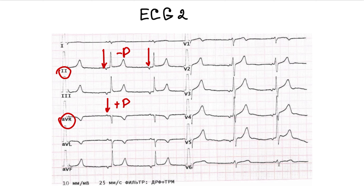The p-wave is consistent within the same lead and still precedes the QRS complex, indicating that the atria are being activated before the ventricles. This means that the rhythm source is in the atrium, but the p-wave is not typical for sinus rhythm. There is a clear relationship between the p-wave and QRS complex. The QRS complex is narrow and not deformed. The rhythm is regular. This is an atrial rhythm.